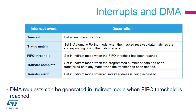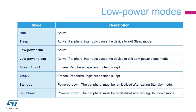The Quad SPI memory interface has five interrupt sources: timeout, status match — when the masked received data matches the corresponding bits in the match register in automatic polling mode — FIFO threshold, transfer complete, and transfer error. DMA requests can be generated in indirect mode when the FIFO threshold is reached. The Quad SPI memory interface is active in run, sleep, low-power run, and low-power sleep modes.